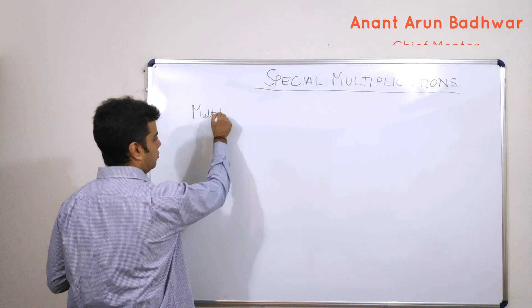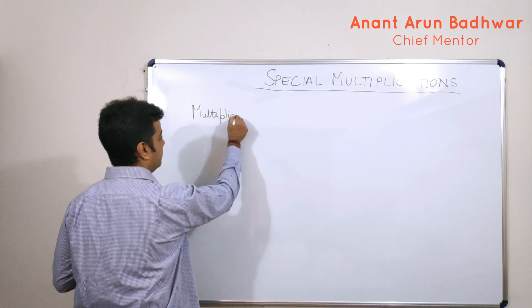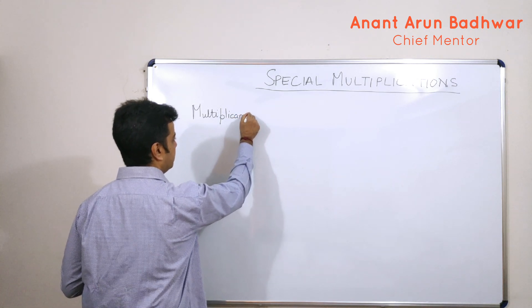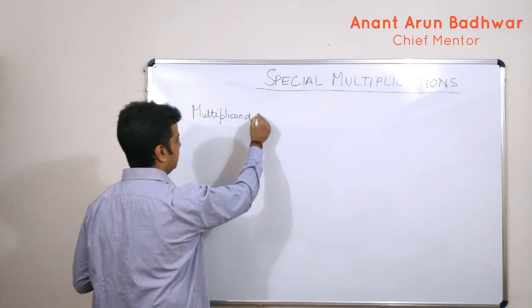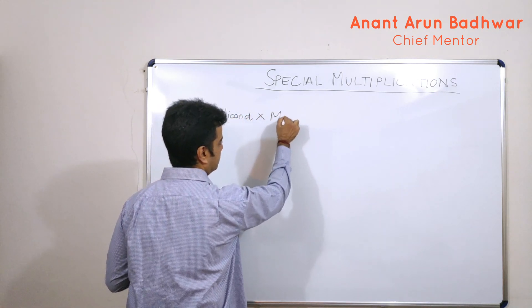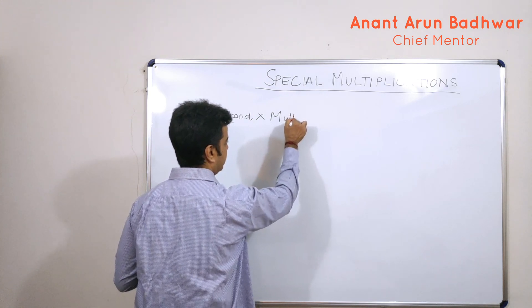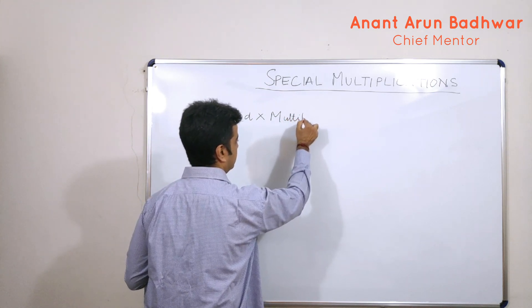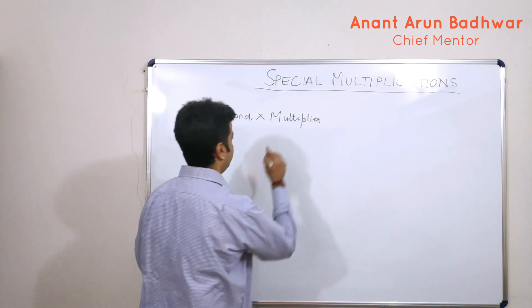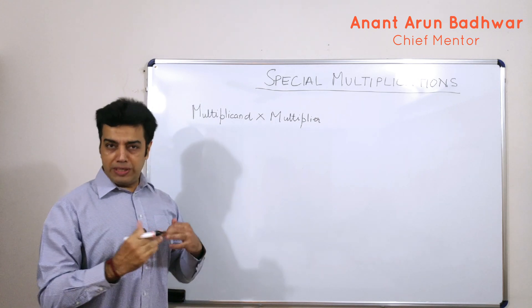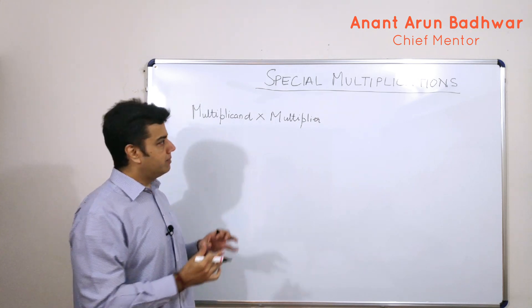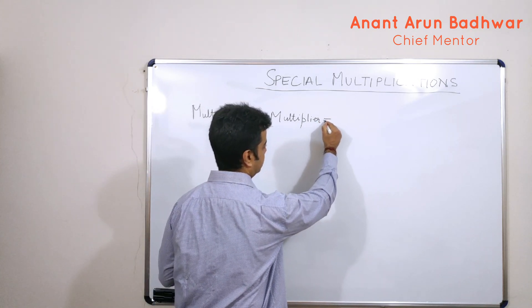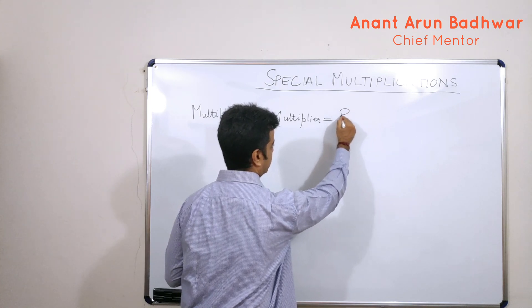As we all know, when we are multiplying two numbers, one of them is known as the multiplicand and the other one is known as the multiplier. This multiplicand, when multiplied with the multiplier, gives a product.